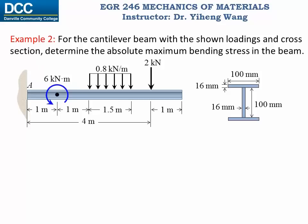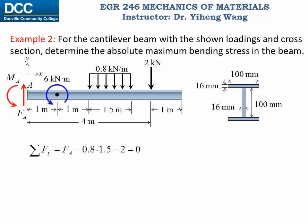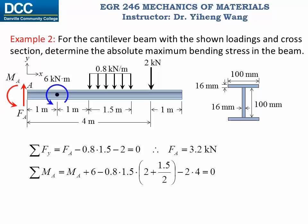Let's quickly look at this second example. We have a cantilever beam with the shown loadings and cross-section, and we need to determine the absolute maximum bending stress. As established, we first sketch the bending moment diagram to find where the absolute maximum bending moment occurs, then apply the flexure formula. We begin with the free body diagram, mark the unknown support reactions — there is no force along the horizontal direction — then solve for the vertical reaction and the support couple moment at point A.